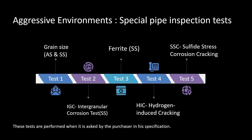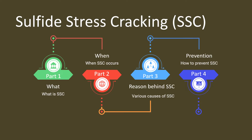In this video series we are discussing special pipe inspection tests, especially in aggressive environments. In this part we are going to cover sulfide stress corrosion cracking. The four parts we will cover are: what is sulfide stress cracking, when it occurs, what are the reasons behind this kind of cracking, and how we can prevent it.